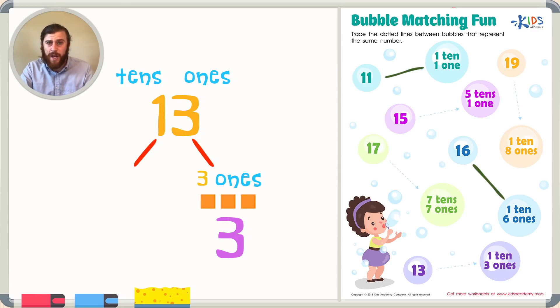In the tens place we have 1 ten. I know that because there is just number 1 and it is in the tens place. So this could be represented by the number 10, by 1 long which of course has 10 cubes, or by writing 1 ten.